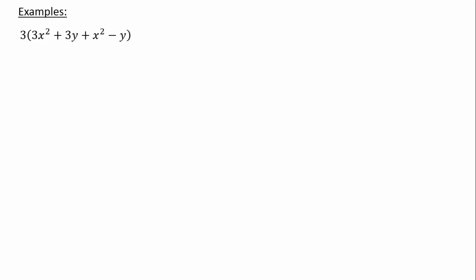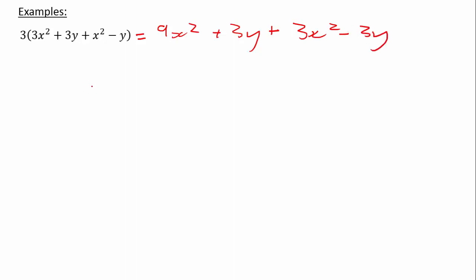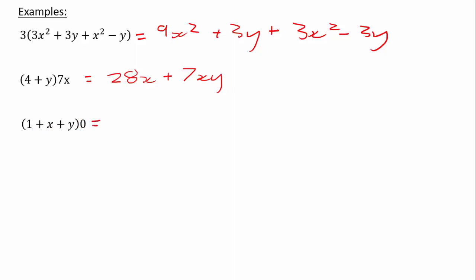Let's look at one more set of examples. Here 3 is now being multiplied by a polynomial with more than three terms. 3 times 3x² is 9x², 3 times 3y is plus 9y — this is a constant, very easy — plus 3x² minus 3y. What about (4 + y) times 7x? I've put the monomial on the other side, but that's still going to be 4 times 7x is 28x, and y times 7x is 7xy. And (1 + x + y) times 0 — anything multiplied by 0 equals 0, so we're multiplying the entire bracket by 0.